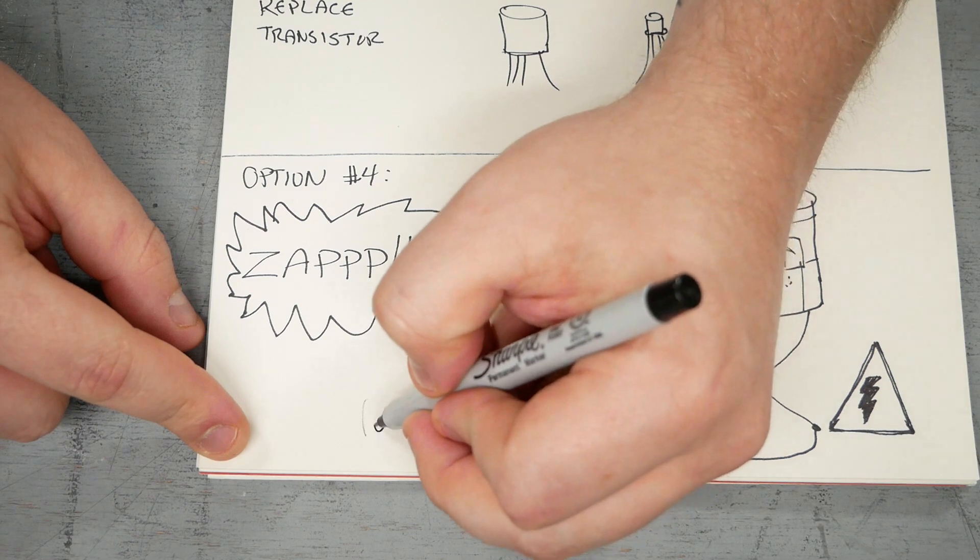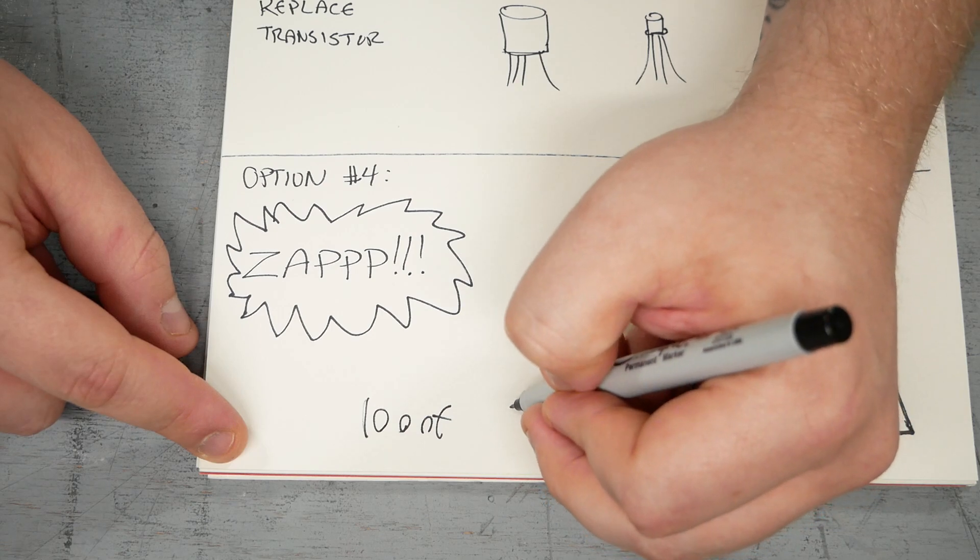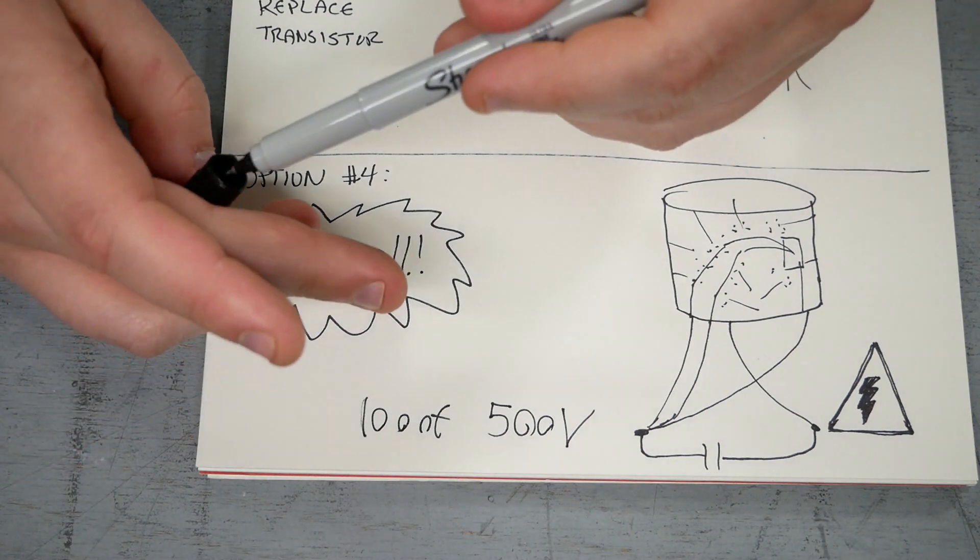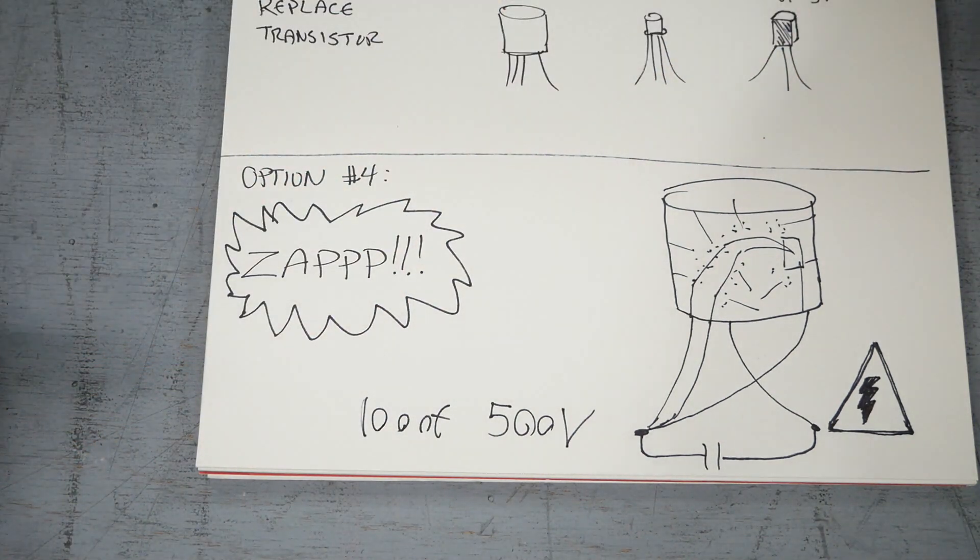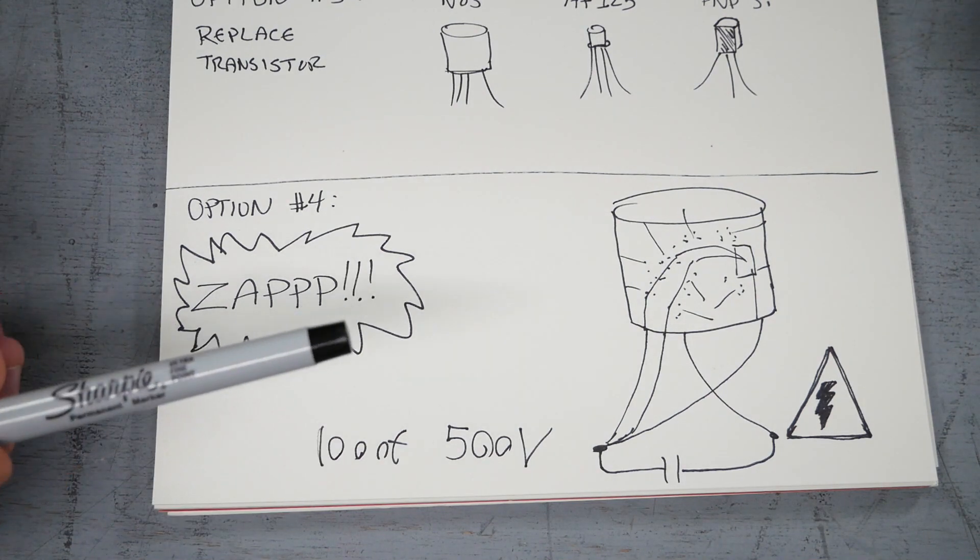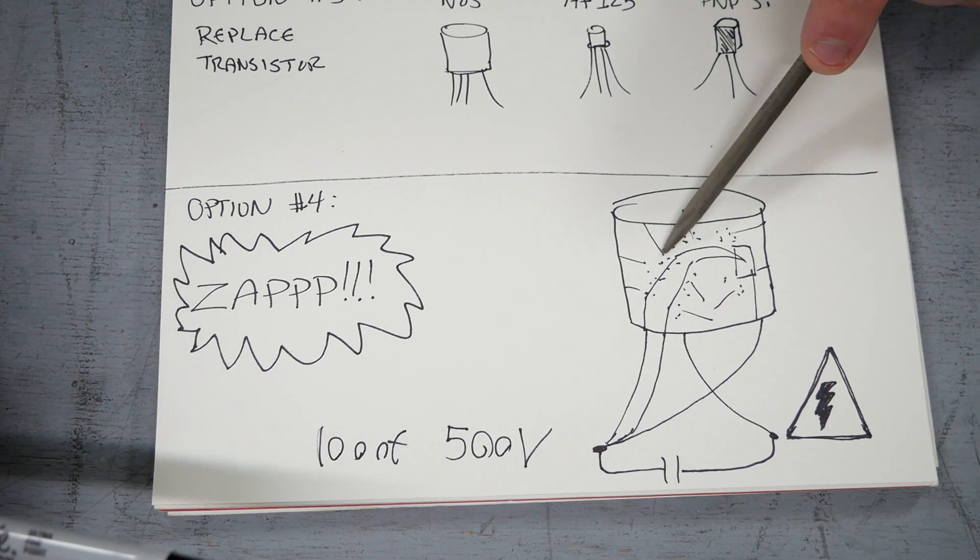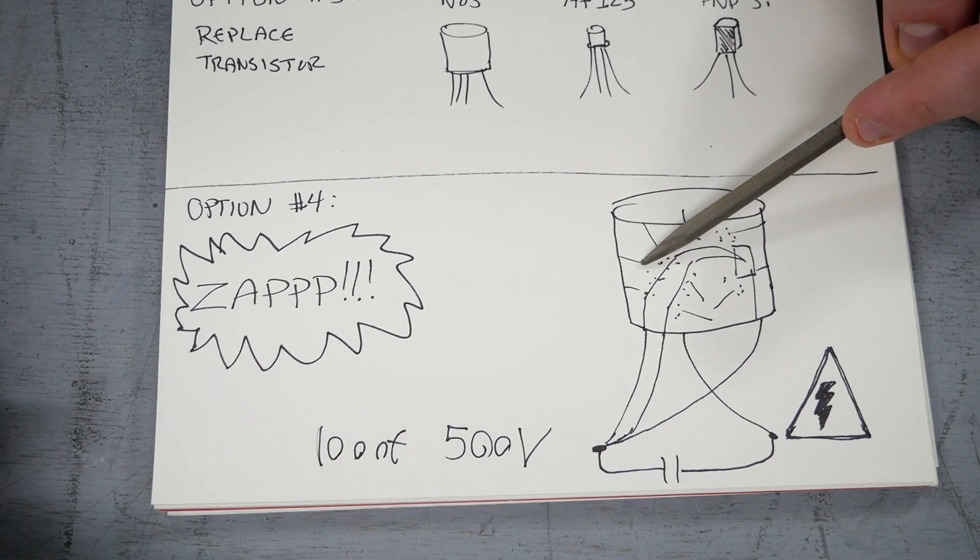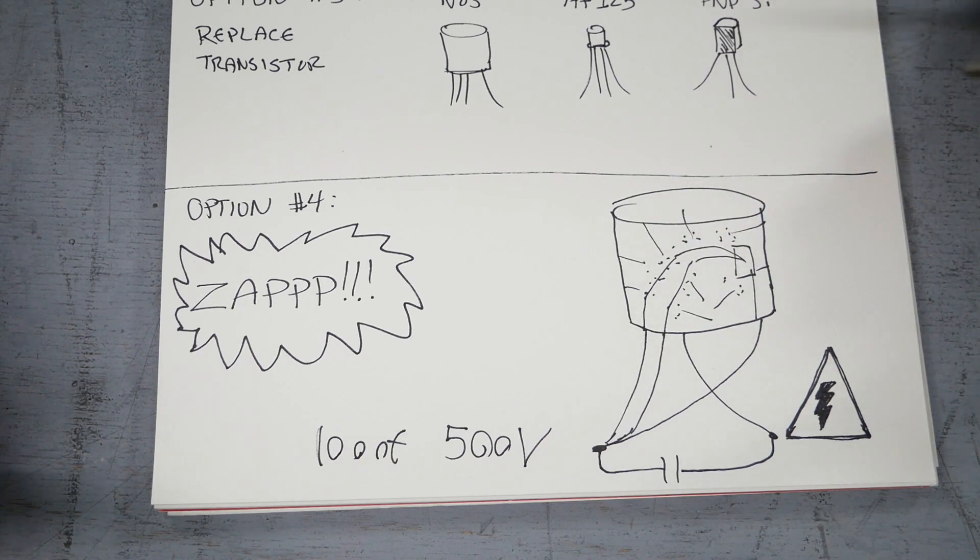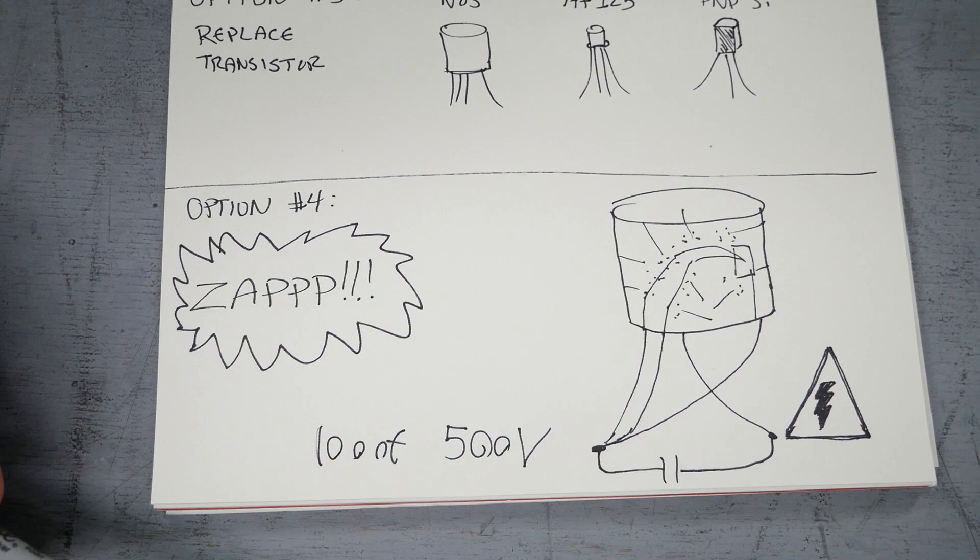We're going to do a 100 nanofarad cap. And we're going to do that at, we're going to try it at 500 volts. There are different tips out there for how to do this. And this isn't my idea. I didn't come up with this. There are other videos showing this being done. Some people would recommend a higher capacitance at a lower voltage. I agree with some other people that a higher voltage seems to make more sense because then the arc that you will create will theoretically burn back the whisker farther. So this is where we're going to try 100 nanofarads at 500 volts.